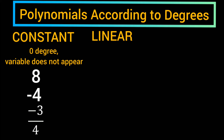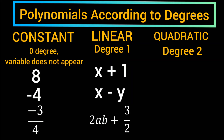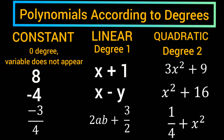Linear: degree 1. Examples: x plus 1, x minus y, 2ab plus 3 over 2. Quadratic: degree 2. Examples: 3x squared plus 9, x squared plus 16, one fourth plus x squared.